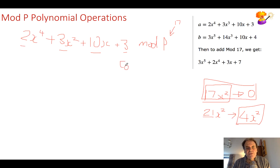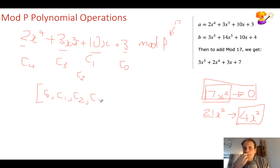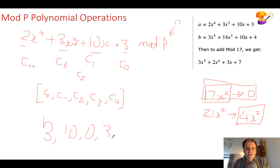So this becomes coefficient c0, this becomes coefficient c1, and this should be to the power of 3. We have coefficient c0, coefficient c1, then coefficient c3, and coefficient c4. Normally when we list this, we list them as c0, c1, c2, c3, c4. So in this case we have 3, 10, 0, 3, 2. That is our list of coefficients which defines this polynomial.